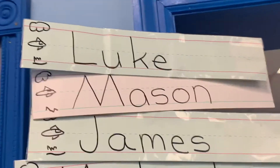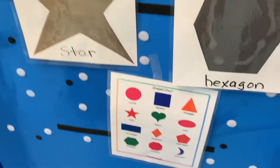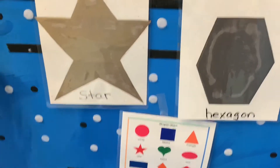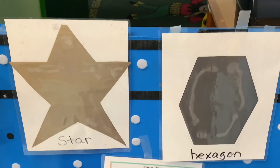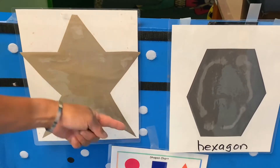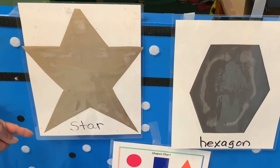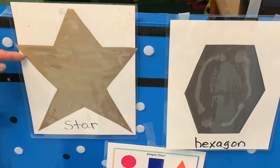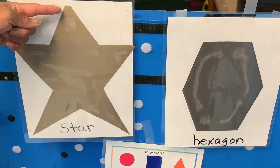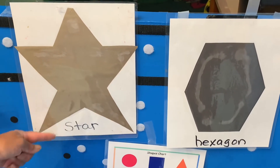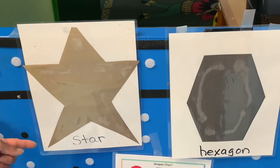Here we are at the shape wall. We talked about diagonal and straight lines. Let's check out the star. How many points are in a star? One, two, three, four, five. But how many sides? Diagonal sides — one, two, three, four, five, six, seven, eight, nine, ten. Double the amount of points.